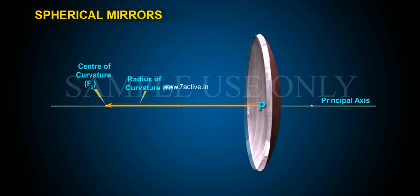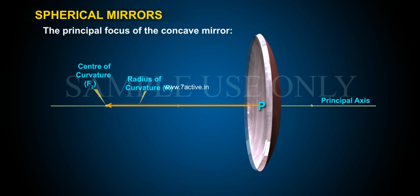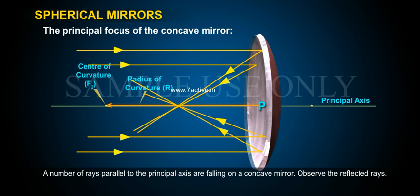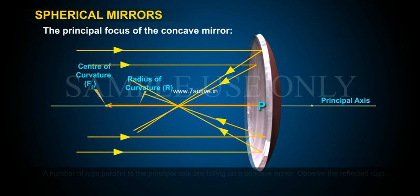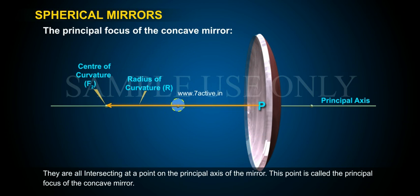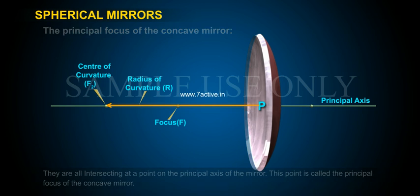Observe this video. The principal focus of the concave mirror. A number of rays parallel to the principal axis are falling on a concave mirror. Observe the reflected rays — they are all intersecting at a point on the principal axis of the mirror. This point is called the principal focus of the concave mirror.